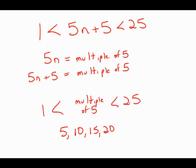Those are the multiples of 5 that are greater than 1 and less than 25. And there are 4 of them. So this is answer choice B.